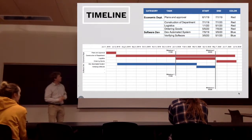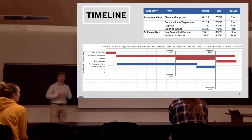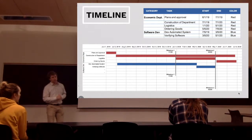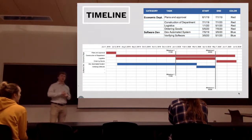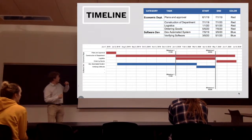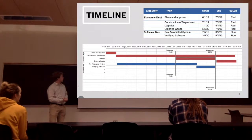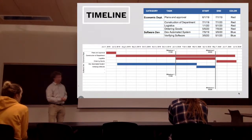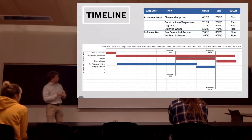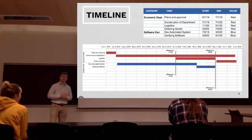For our timeline, we broke it into two categories: the economic department and software development. We want to get this done before autumn of 2020 to have it implemented by the beginning of that school year. We would spend roughly one month to plan and approve this proposal, then one year for the construction of the department, and also one year to develop the automated system.